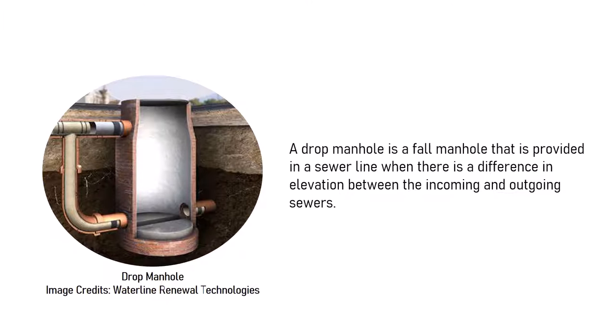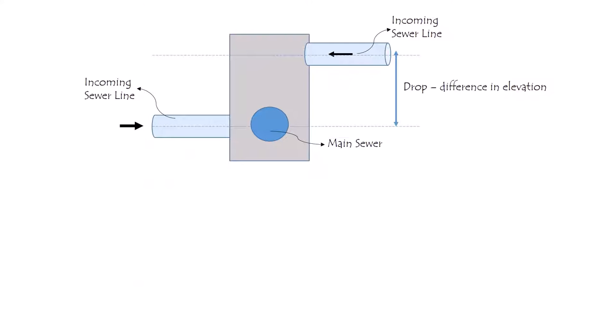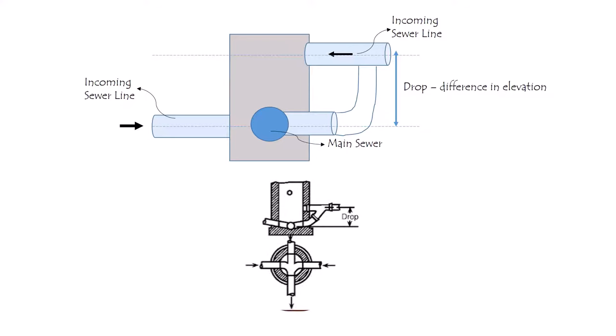A separate video has been made on what is a manhole, their components, as well as locations where they are actually designed and constructed. The link to the video will be given in the description below. For better understanding of what is a drop manhole, we will look into a cross section diagram of a sewer line system with various manholes located at different sections.